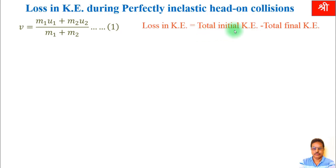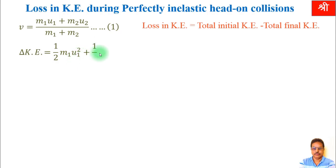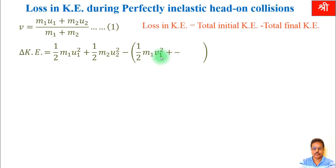Total initial kinetic energy: the formula for kinetic energy is ½mv². So initial kinetic energy of first body is ½·M1·U1², where M1 is mass and U1 is initial velocity before collision; plus ½·M2·U2² for the second body. Then we subtract the final kinetic energy, which is ½·M1·V1². Mass doesn't change during collision — initial mass M1 remains M1 after collision — but velocity changes from U1 to V1.